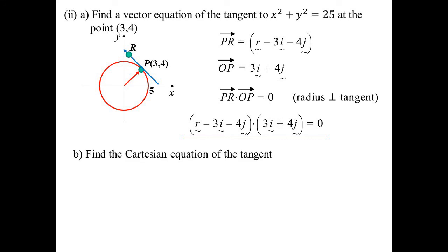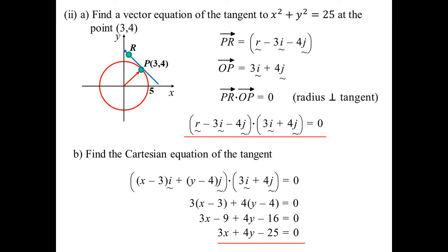Now, let's actually prove that is a line. We're going to find the Cartesian equation of the tangent. In the first one, I've broken it out into its components. So x minus 3 in the i direction, y minus 4 in the j direction. We'll do our dot product. So we get 3 lots of x minus 3 plus 4, y minus 4. And so we'll get 3x minus 9 plus 4y minus 16. And so we end up with 3x minus 4y minus 25 equals zero.